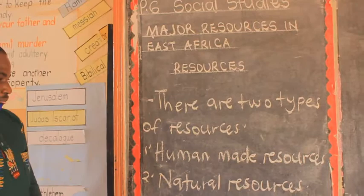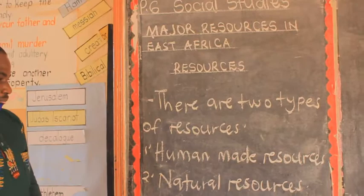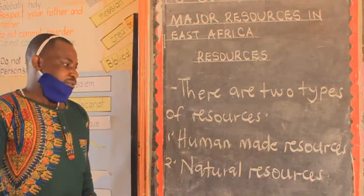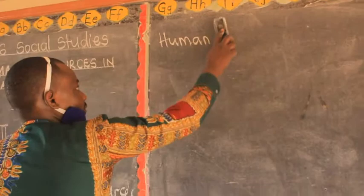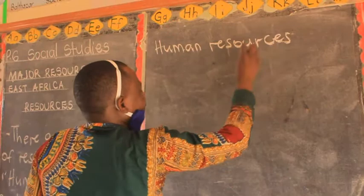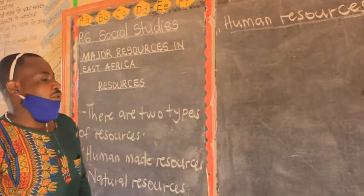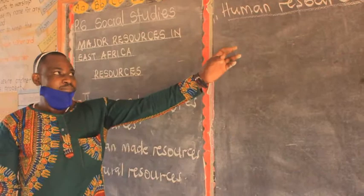We shall be looking at each one by one. The first type is human-made resources. Human resources are components of the environment that people use to satisfy their needs, and they are made by people.